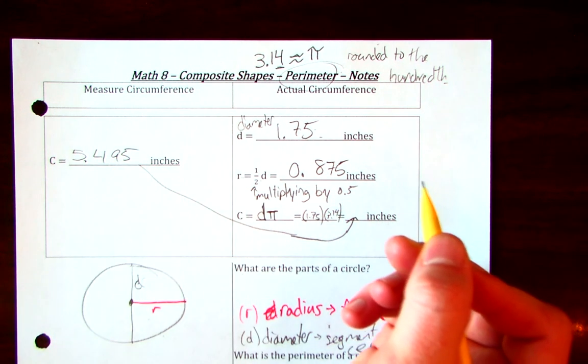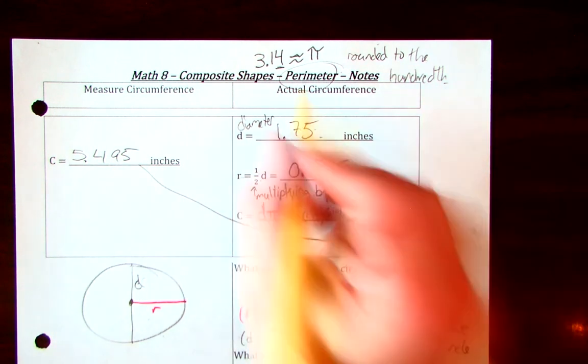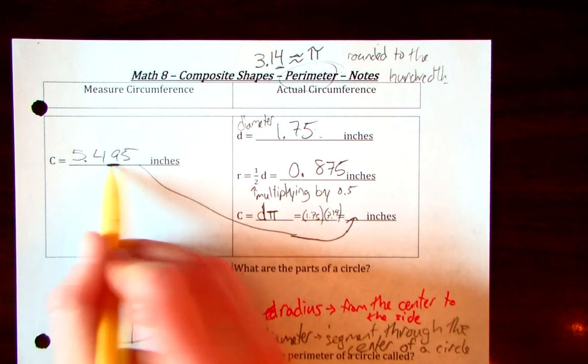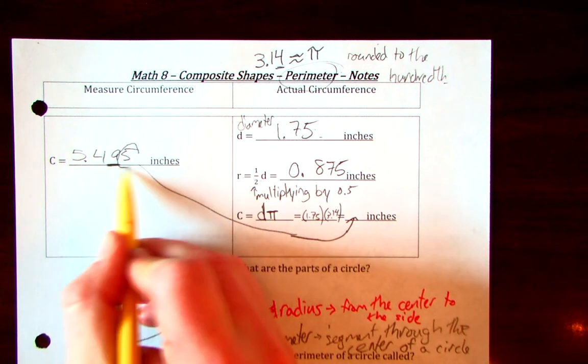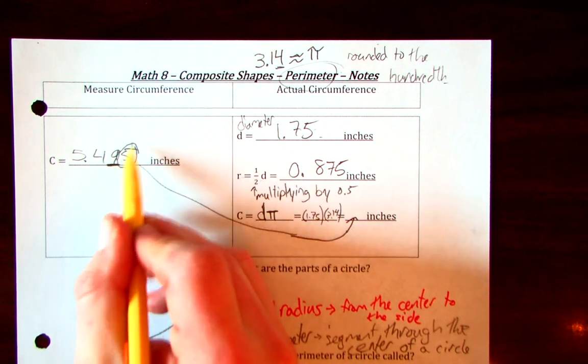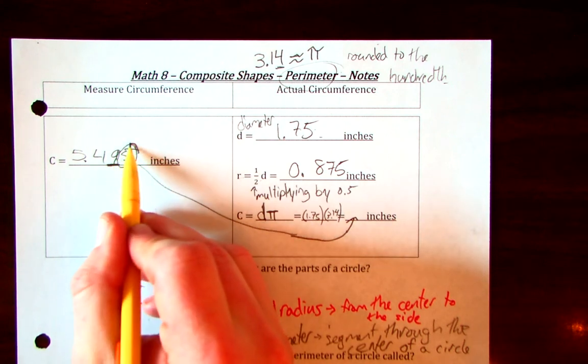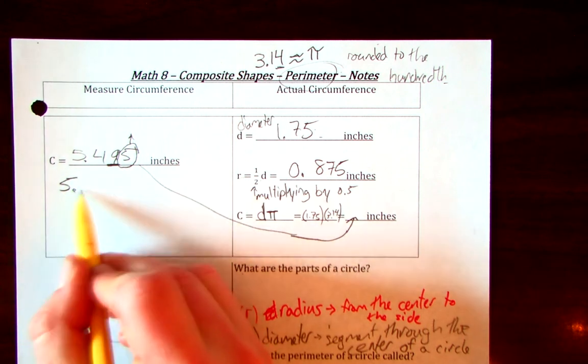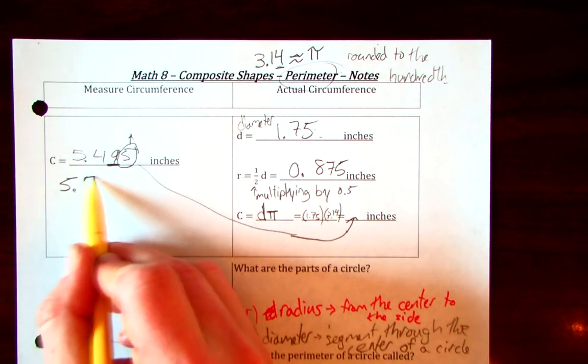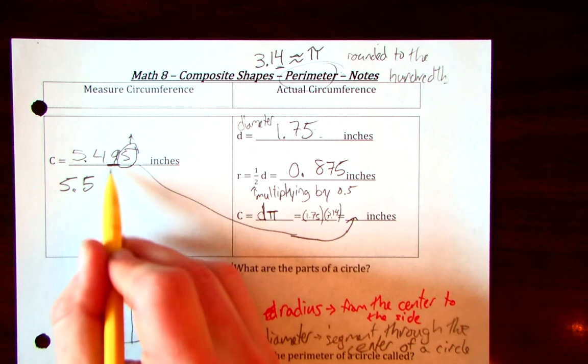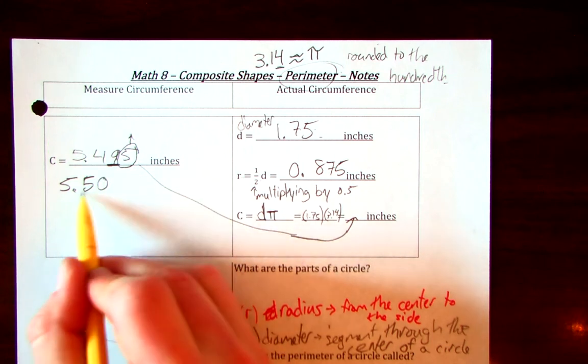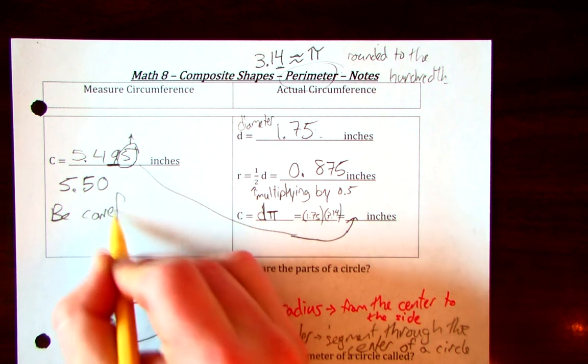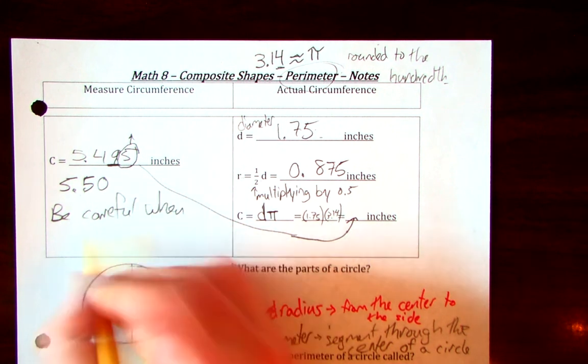Make sure that you're following our rounding. We're going to assign it to the nearest hundredth. We underline the hundredth column and we circle the one to the right. 5 and above, we give that underlined number a shove. We're going to have our circumference is 5.5, because what happens? That goes to zero, and it bumps up the next one. So, be careful when rounding.